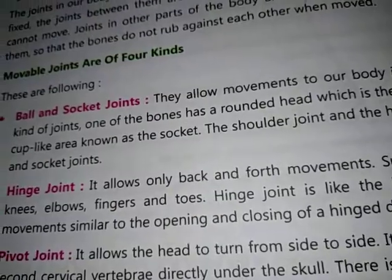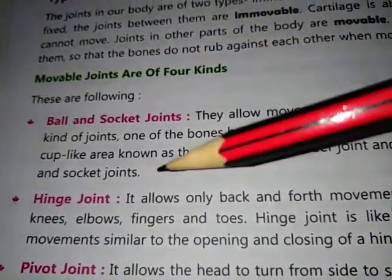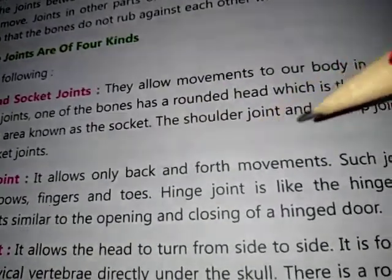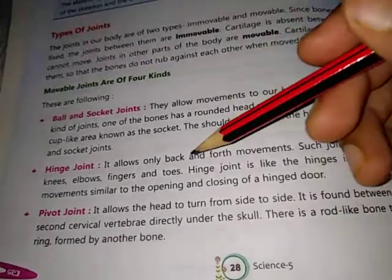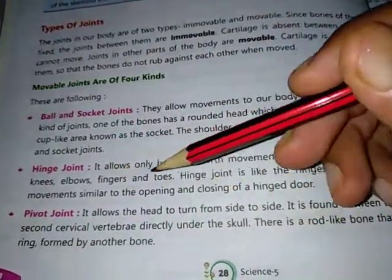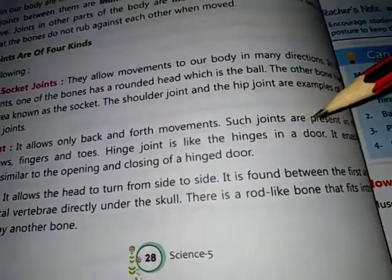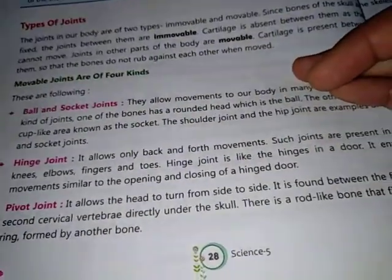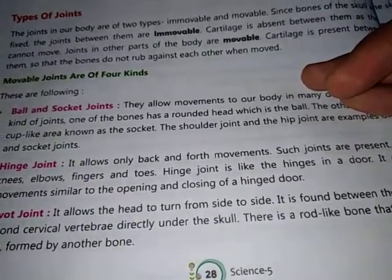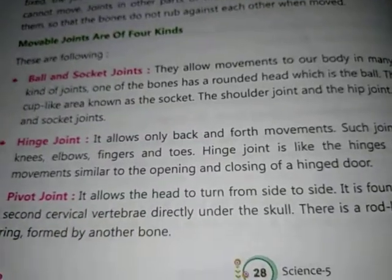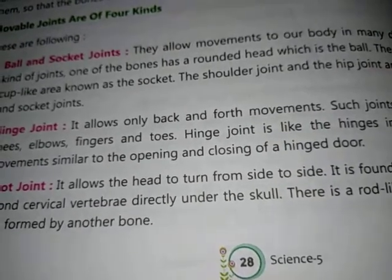Hinge joint: it allows only back and forth movements. Such joints are present in the knees, elbows, fingers, and toes. A hinge joint is like the hinges in a door — it enables movement similar to the opening and closing of a door.